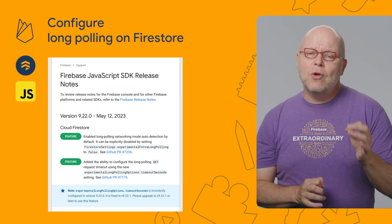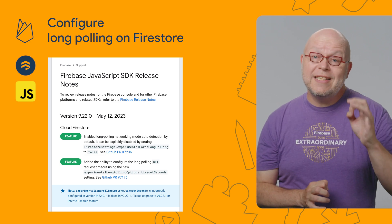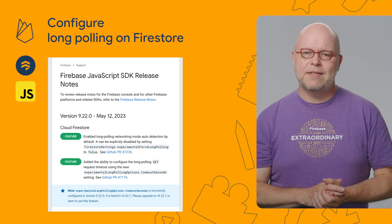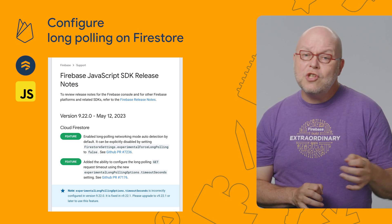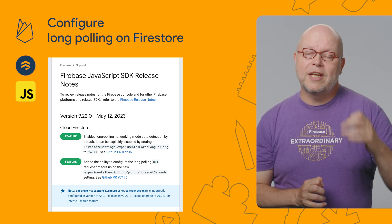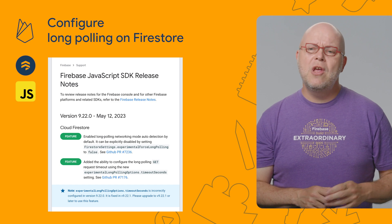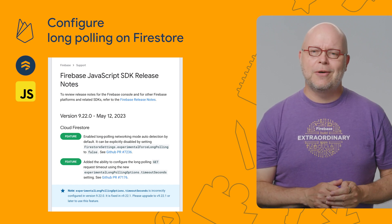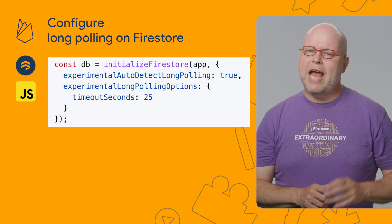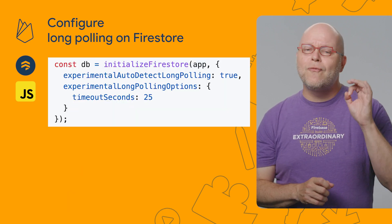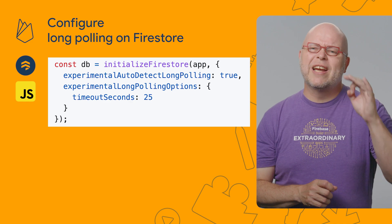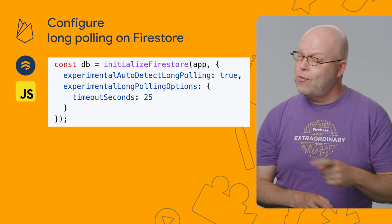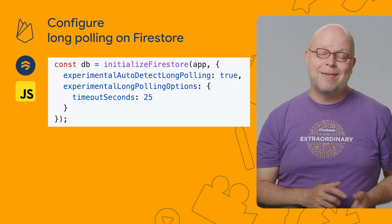We now enable the logic to auto-detect the need for long polling in our SDKs, so your users will see fewer connectivity issues without you having to make any changes to the code. And if needed, you can configure the timeout for GET requests with long polling as shown in this code example.